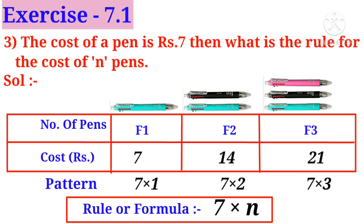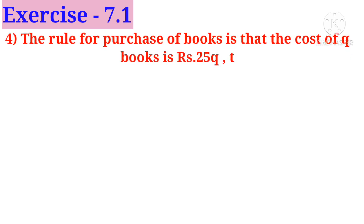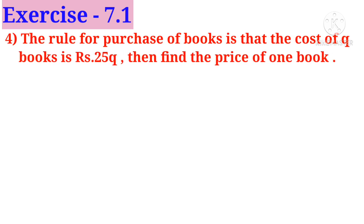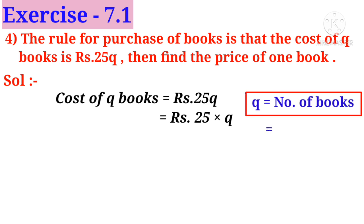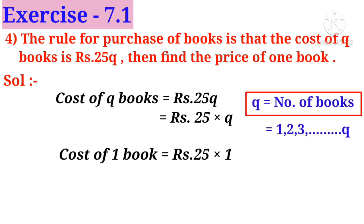Fourth problem: the rule for purchase of books is that the cost of q books is rupees 25q. Find the price of one book. Solution: the cost of q books is rupees 25×q, where q is the number of books. To find the cost of one book, put one in place of q. That is, rupees 25×1, so the cost of one book is rupees 25.